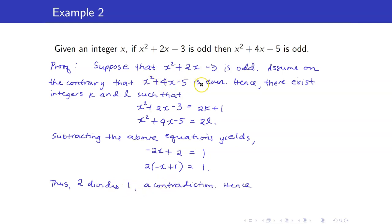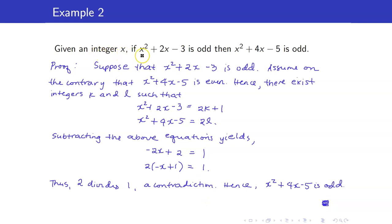Hence, the assumption that x² + 4x − 5 is even is false. So we get that x² + 4x − 5 is odd. That concludes the proof. Take note that you should include the statement 'let x be an integer' at the beginning, because you will need it when concluding that x is an integer to arrive at the contradiction that 2 divides 1.